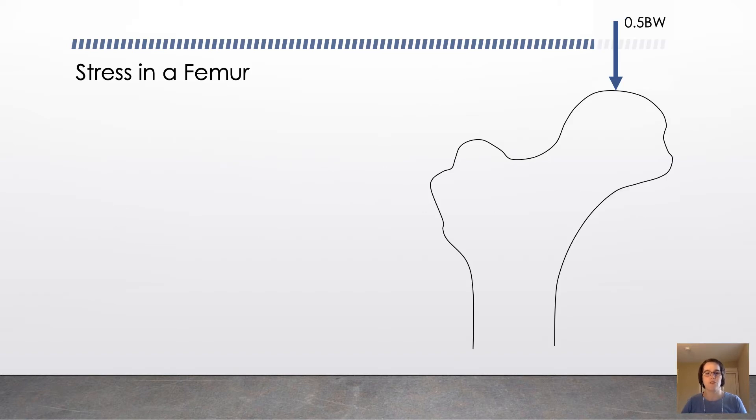So consider for a moment a femur. A typical femur takes about half of the body weight in a quiet standing phase, and you could draw a free body diagram or partial free body diagram of the femur like this.